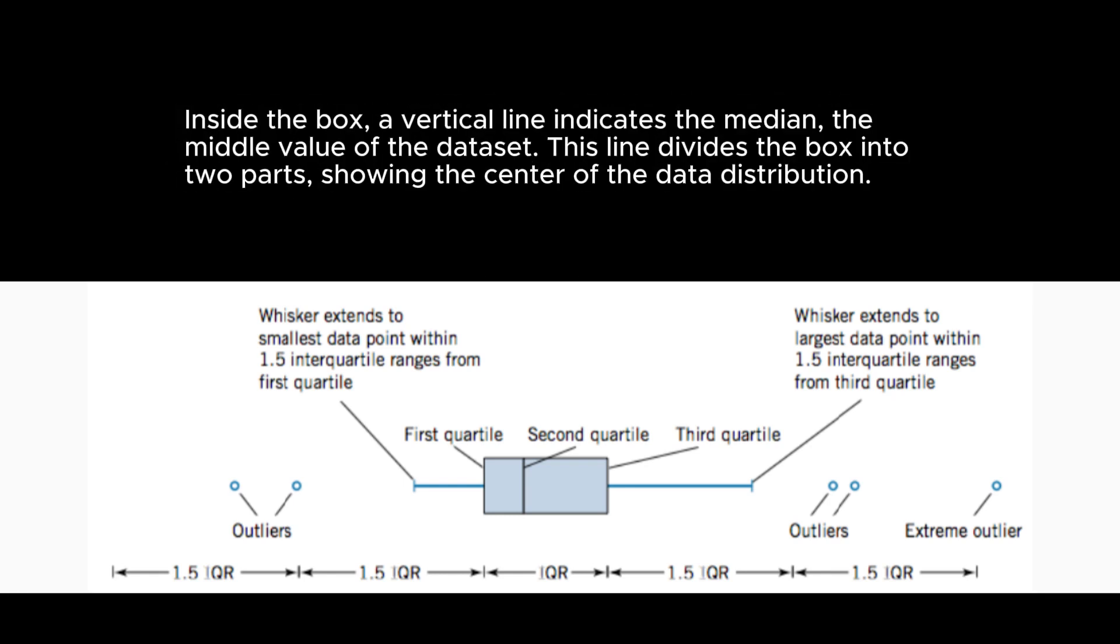The center of the box whisker plot is the median line, which is the line within the box that shows the central tendency of the data.